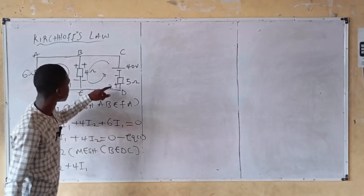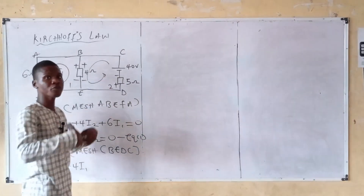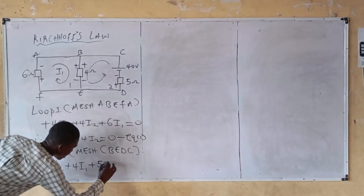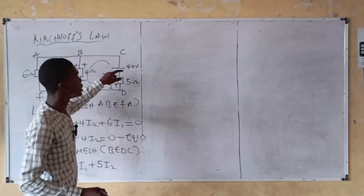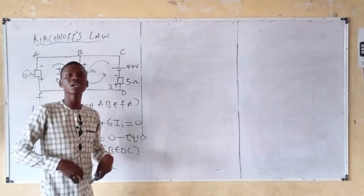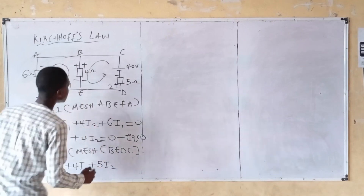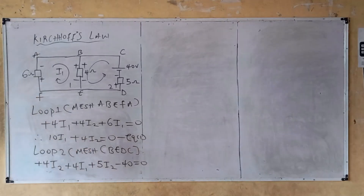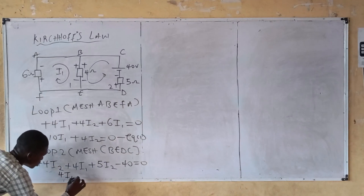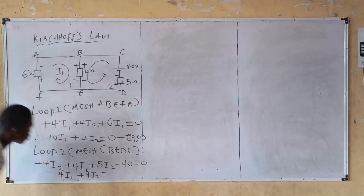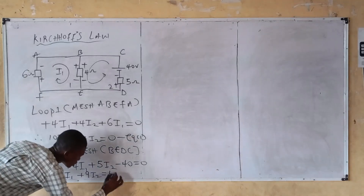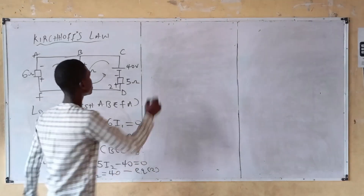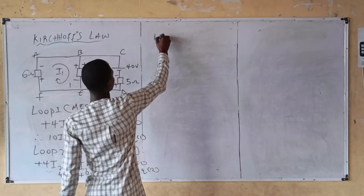D back to C: five ohm resistor with polarity positive-negative. Going from positive to negative is a voltage gain: positive five I2. Then from negative to positive there's a voltage drop: negative 40. Setting equal to zero and collecting like terms gives: four I1 plus nine I2 equals 40. Call this equation two.